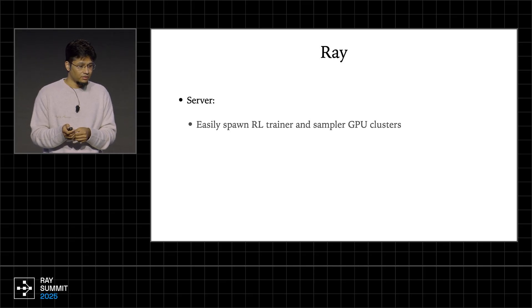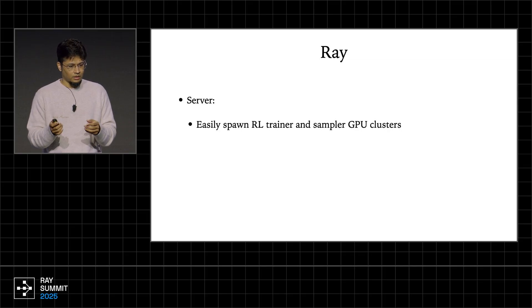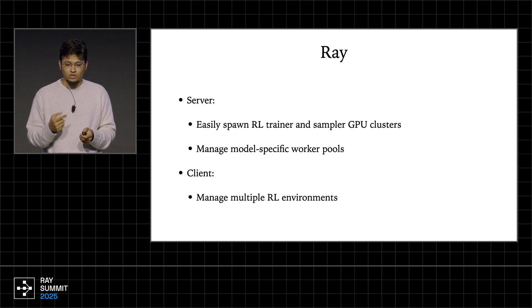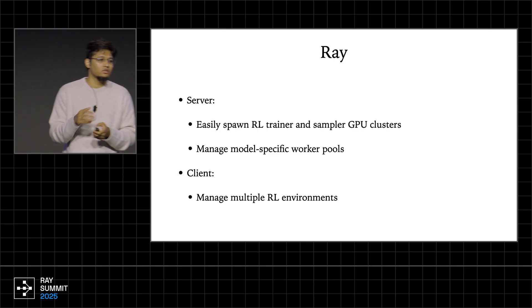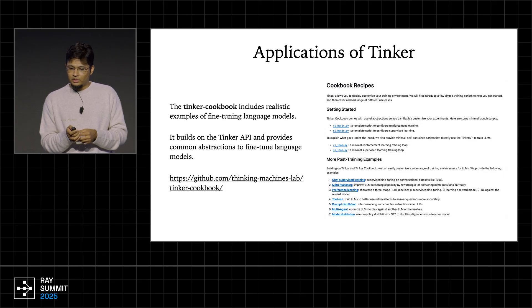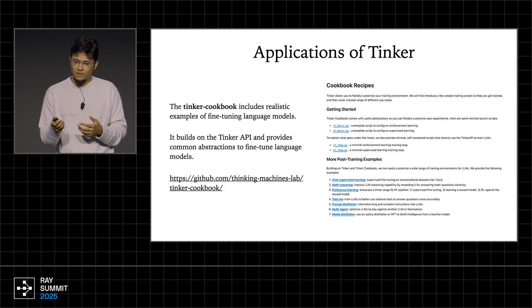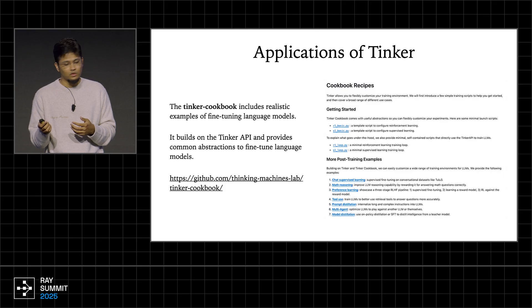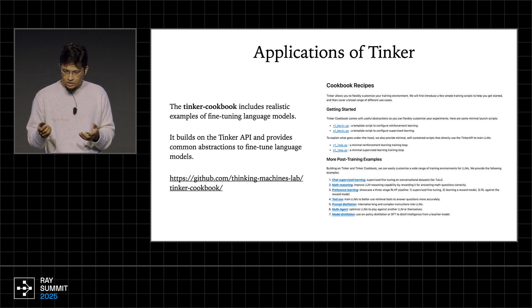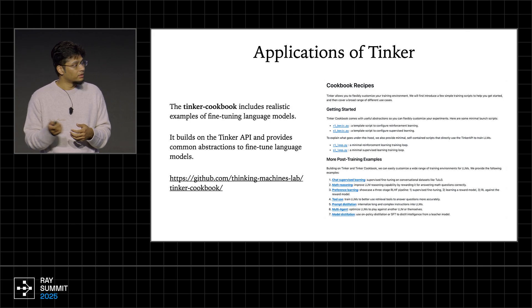We use Ray in the backend for Tinker. It is used to spawn RL trainer and sampler GPU clusters and manage all the different pools of GPUs for different models. You can also use Ray on the client side to manage multiple RL environments in parallel. We provide a full Tinker cookbook with realistic examples of fine-tuning LLMs, including basic reinforcement learning and supervised learning loops, as well as more sophisticated recipes on math reasoning, preference learning, tool use, multi-agent RL, multi-turn RL, and prompt distillation.